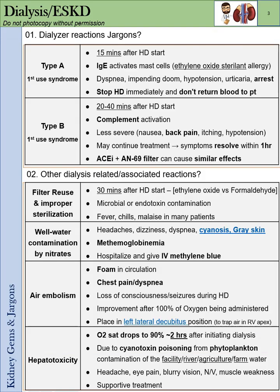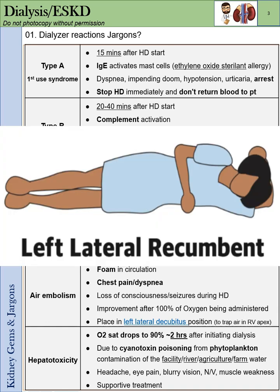Air embolism presents with foam in the circulation, chest pain, dyspnea, loss of consciousness, and seizures. Patients usually improve after 100% oxygen is administered. You have to place them in the left lateral decubitus position to trap air in the right ventricular apex.